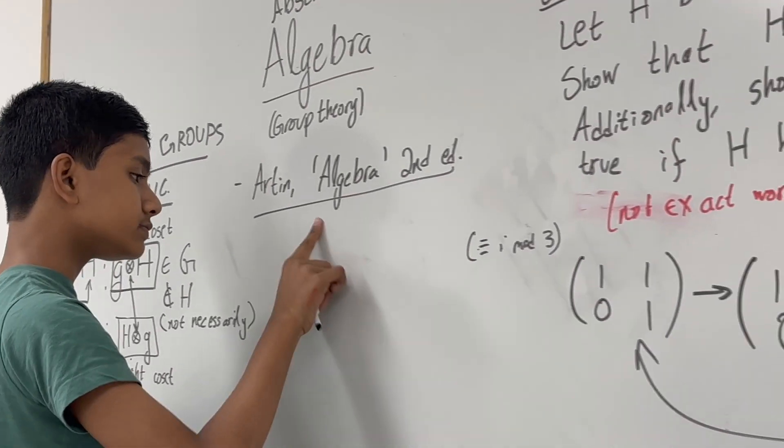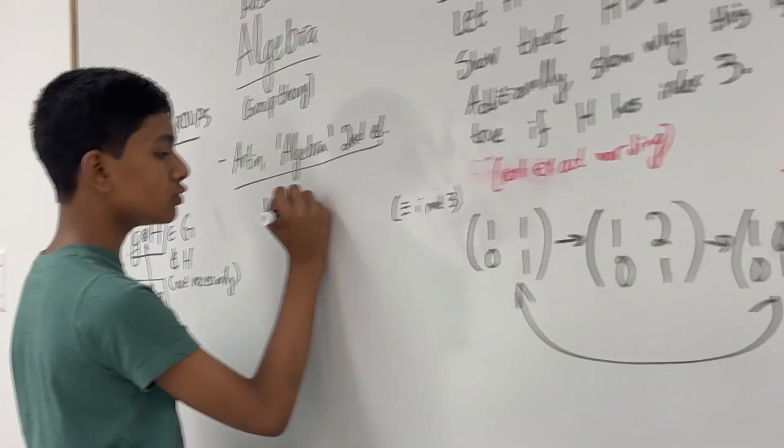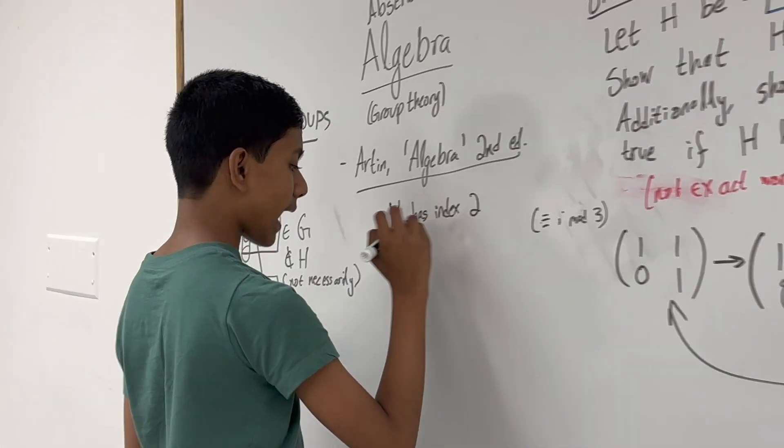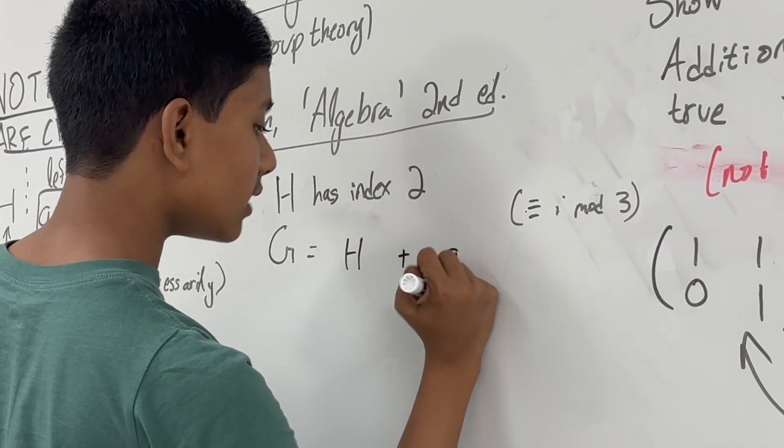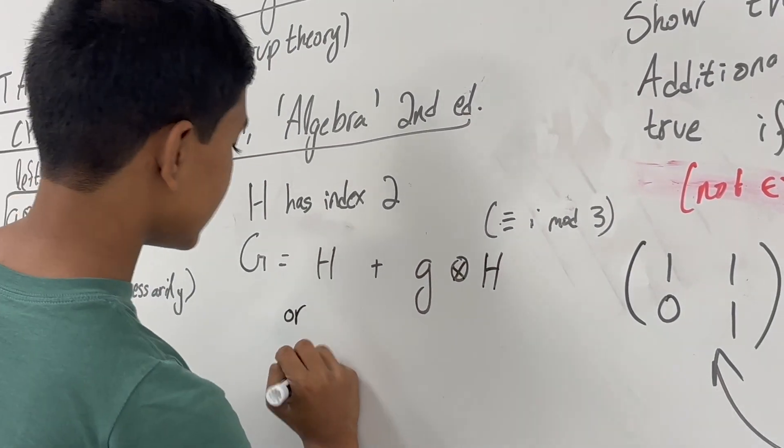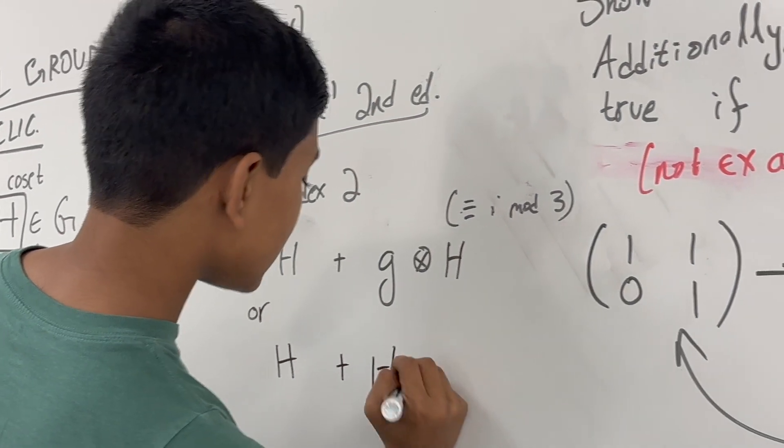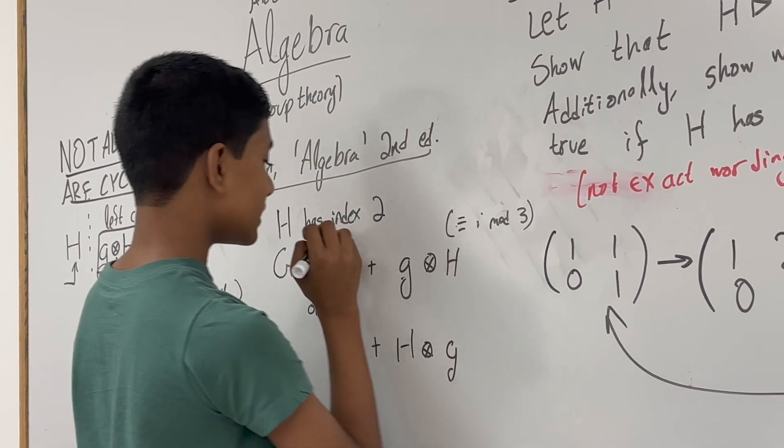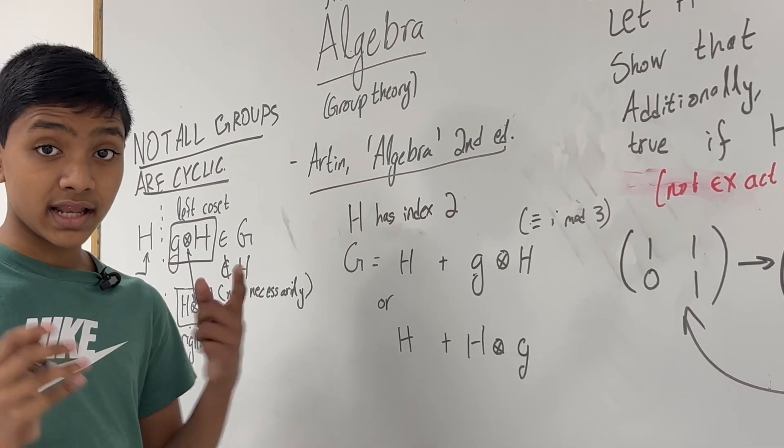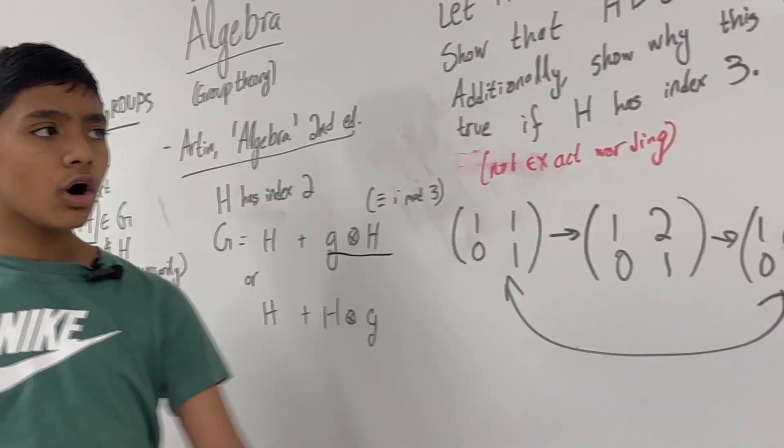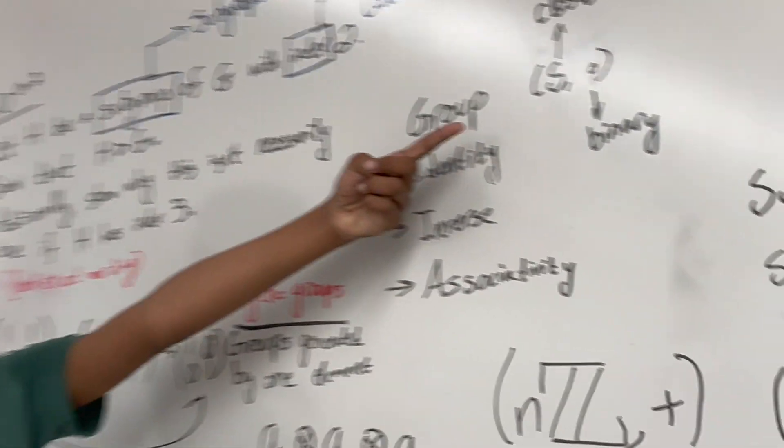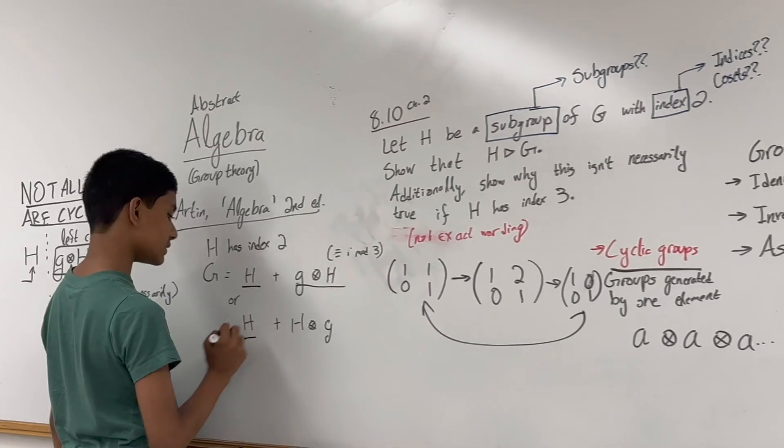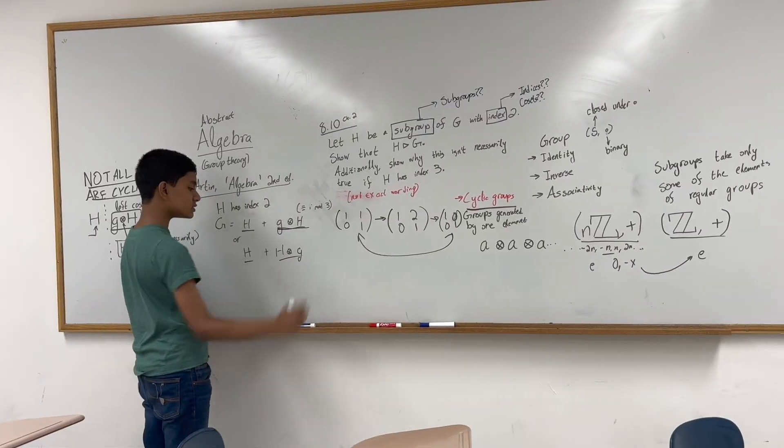So that's what a coset is. But what is an index? Well, if H has index 2, where H is a subgroup of G, then that means G can be written as essentially the sum of H and a left coset or H and a right coset. If it has order 3, then there are two different cosets along with H. And one more thing to say is, this isn't called a co-group, it's called a coset. Why? Because it doesn't necessarily have to follow all of these rules that a regular group has to follow. It acts just like a set.